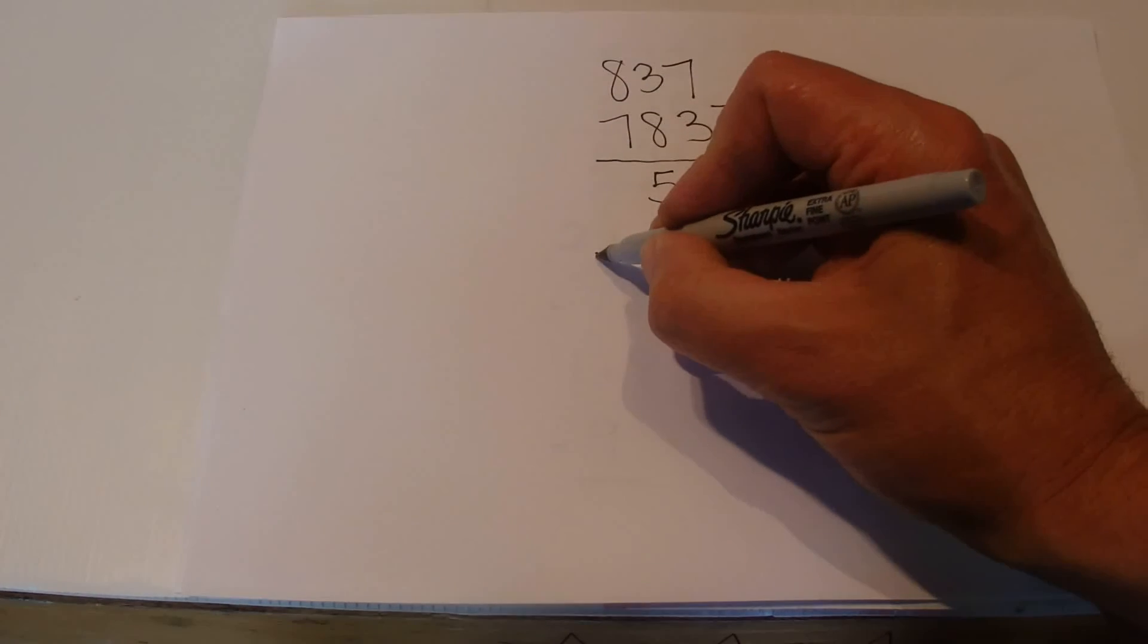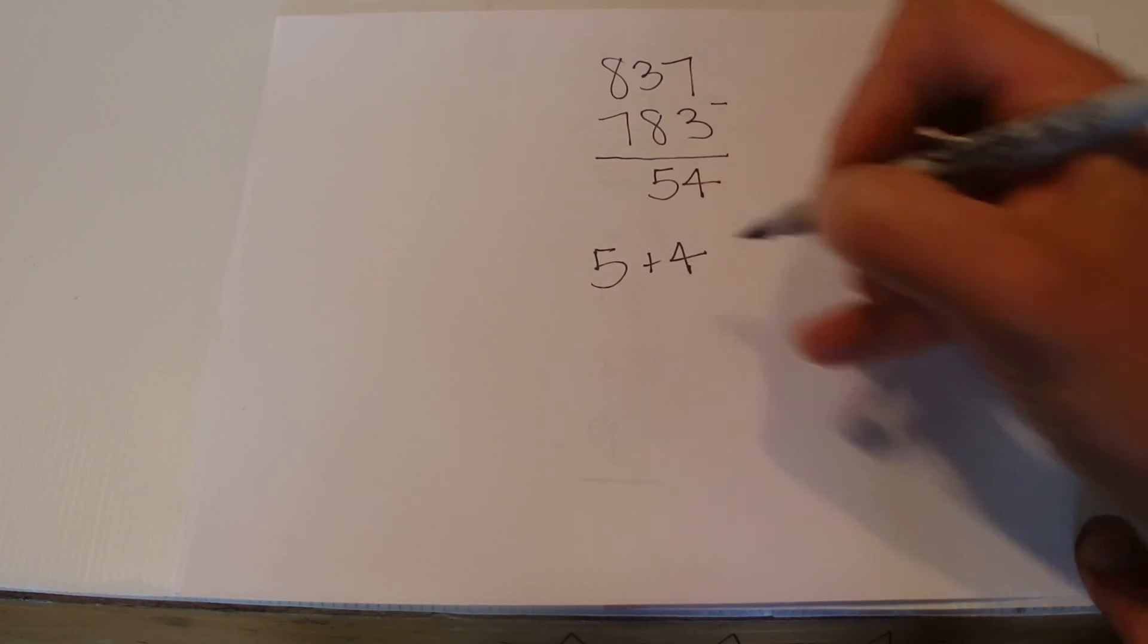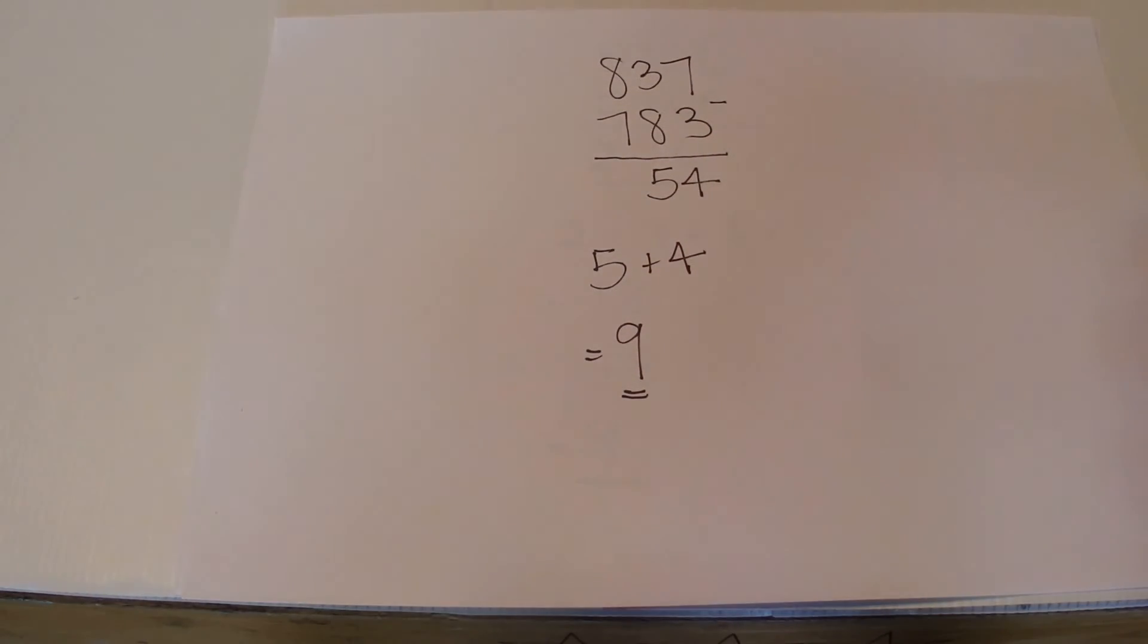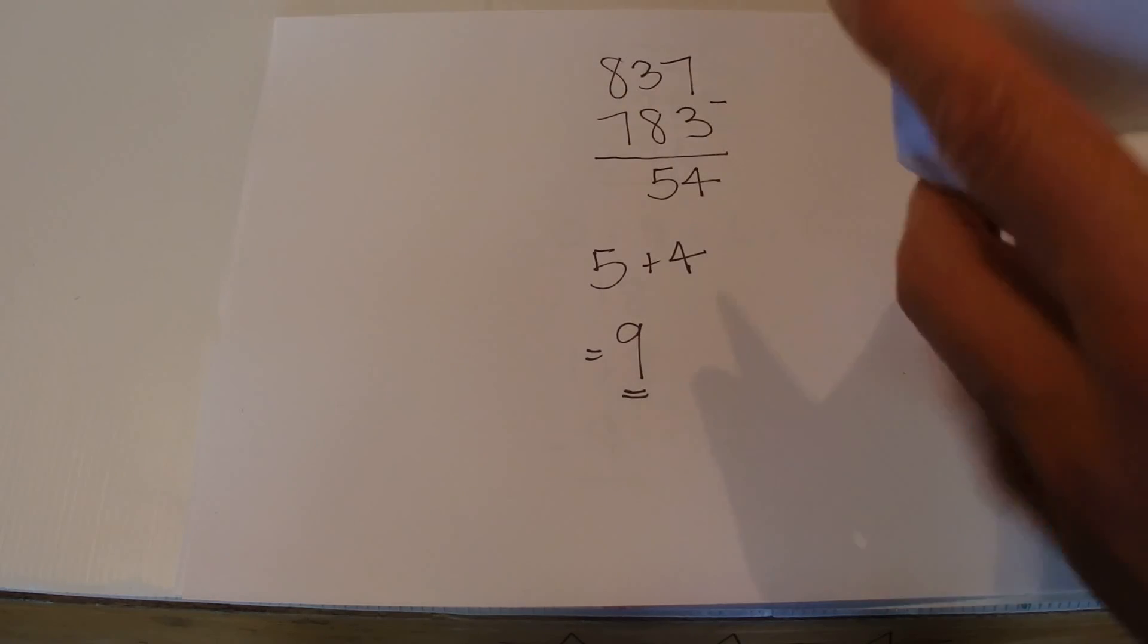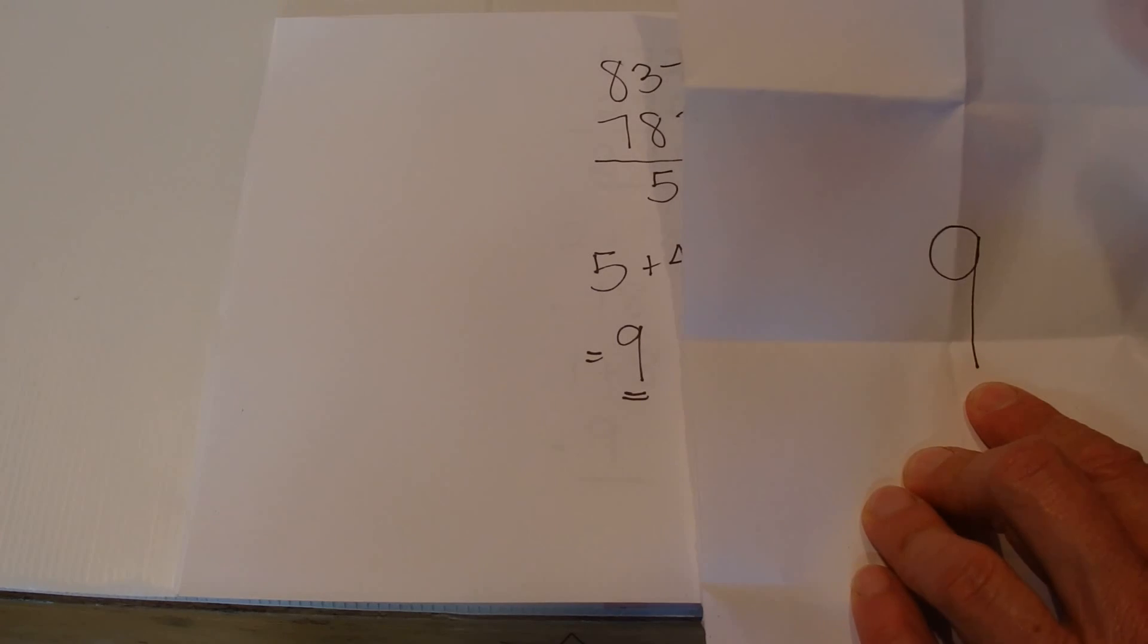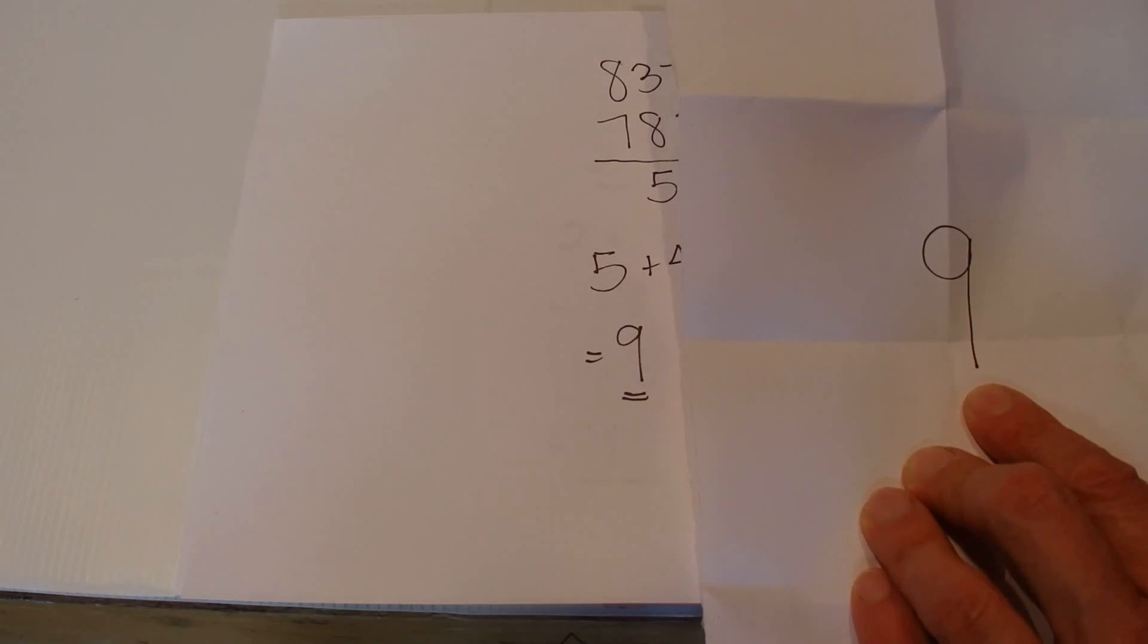Then from the 5 and the 4 in the difference, 5 plus 4 equals 9. And then you ask your friend to open up the piece of paper, and there we go—you've correctly predicted that the answer is 9.